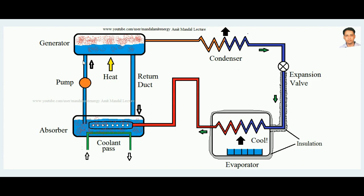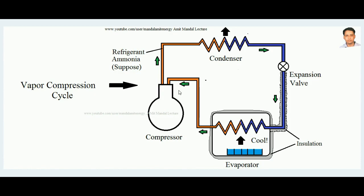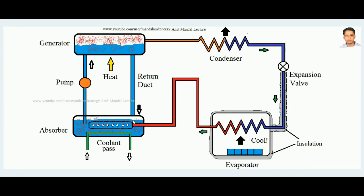By the help of a pump, the aqua ammonia strong solution is sent to the generator. In the generator, heat is supplied. Ammonia is soluble in cold water, but when heat is supplied in the generator, the ammonia is liberated and collects over the top of the liquid water at high pressure. This accomplishes the job of the compressor — taking ammonia at low pressure and delivering it at high pressure.